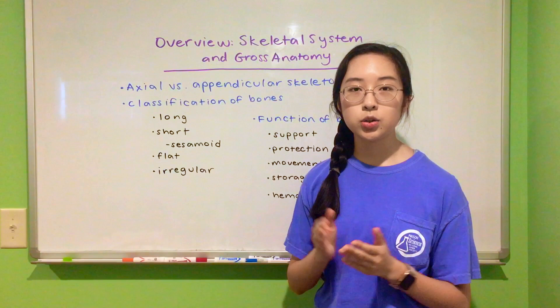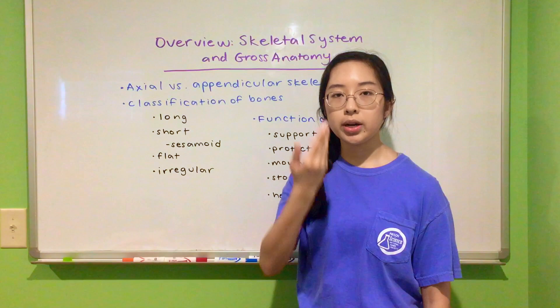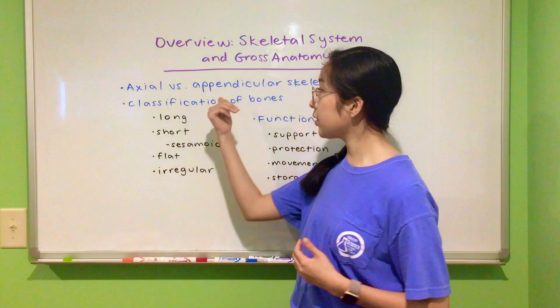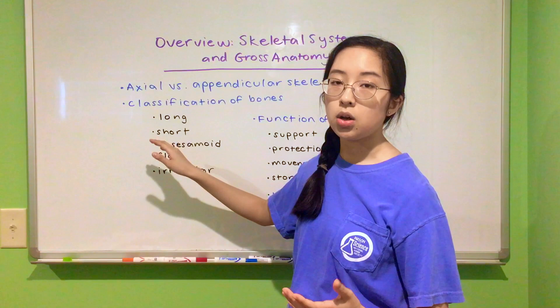In talking about the skeleton, we typically divide it into two major parts: the axial skeleton and the appendicular skeleton. The word axial comes from the root word axis, which means the invisible straight line running down the midline of the body from the top of your head to between your feet. The axial skeleton consists of all the bones that line up along the middle — your skull and your vertebrae down your spine.